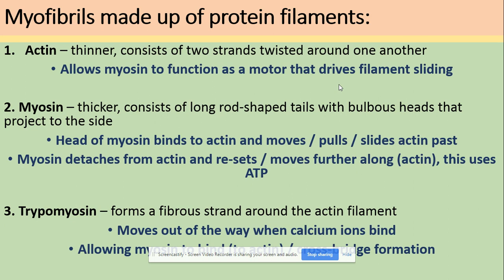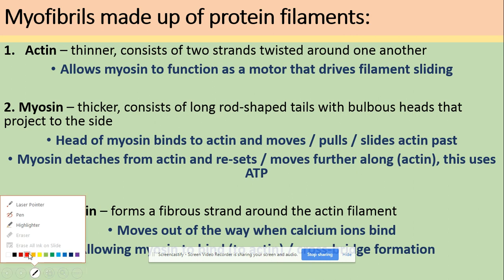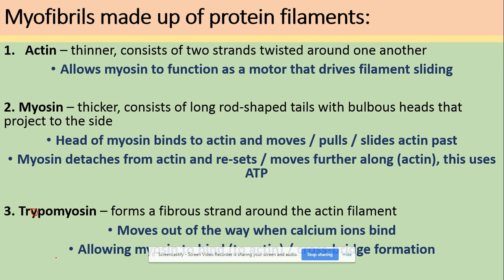This arrangement allows the production of actin-myosin cross bridges. Myosin is the thicker one — it consists of long rod-shaped tails with heads that project to the side. The head of myosin will bind to actin and cause the sliding mechanism. Myosin can also detach from actin and reset, bringing it back to its original position using ATP. Finally, tropomyosin — the fibres wrapped around the actin filaments — will move when calcium ions are present, and once they move they allow myosin to bind to actin.